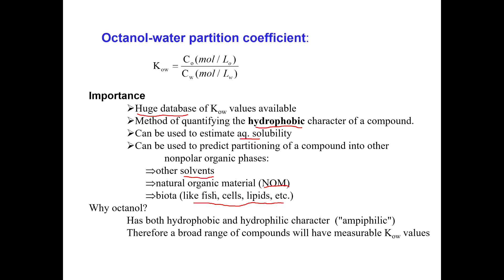Why Octanol? Well, Octanol is 8 carbons, 1, 2, 3, 4, 5, 6, 7, 8, and it's got an OH group on the end because it's an alcohol. Here's my OH group. So there's Octanol.